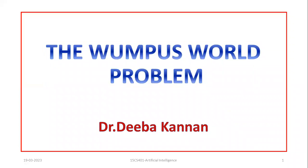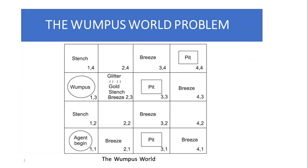In today's session we are going to discuss the Wumpus World problem in artificial intelligence. This is a computer game-based problem where a single agent is going to play a game. The agent needs to enter a cave consisting of a lot of rooms arranged in a grid pattern, with a single door to enter and exit. We don't know what's happening in the next room.